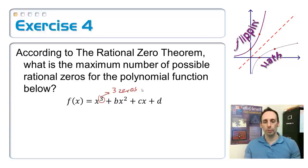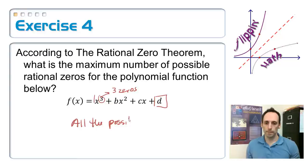Now, I'm going to have more than 3 possibilities from the rational zero theorem. How many possibilities am I going to have? Well, if this leading coefficient is 1, what I'm looking at is all the possibilities, all the possible factors of d. So, all the possible factors of d.